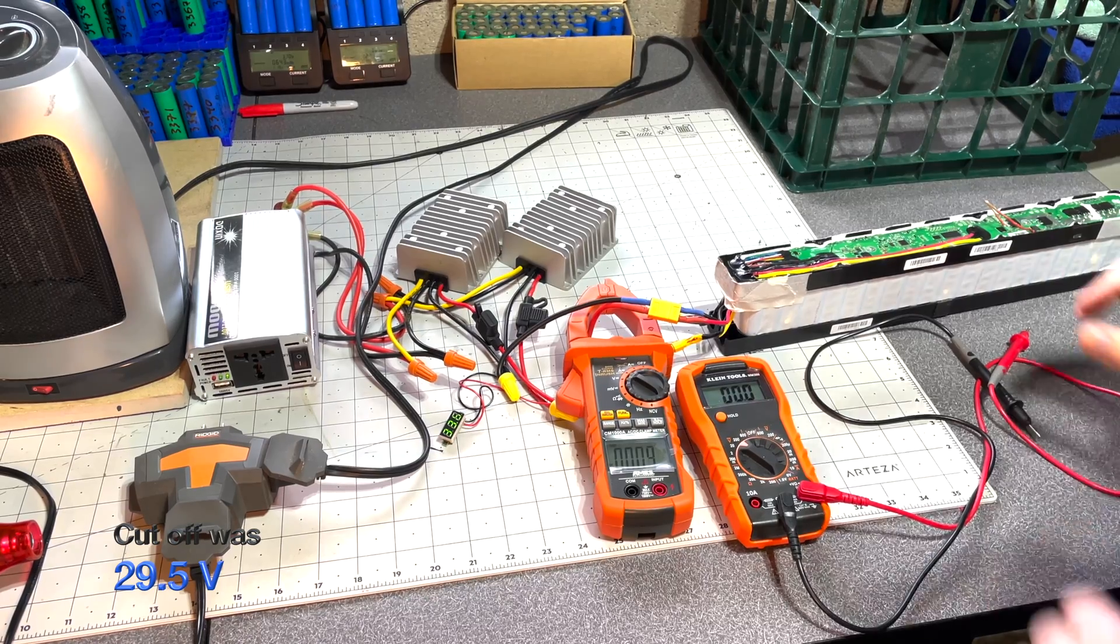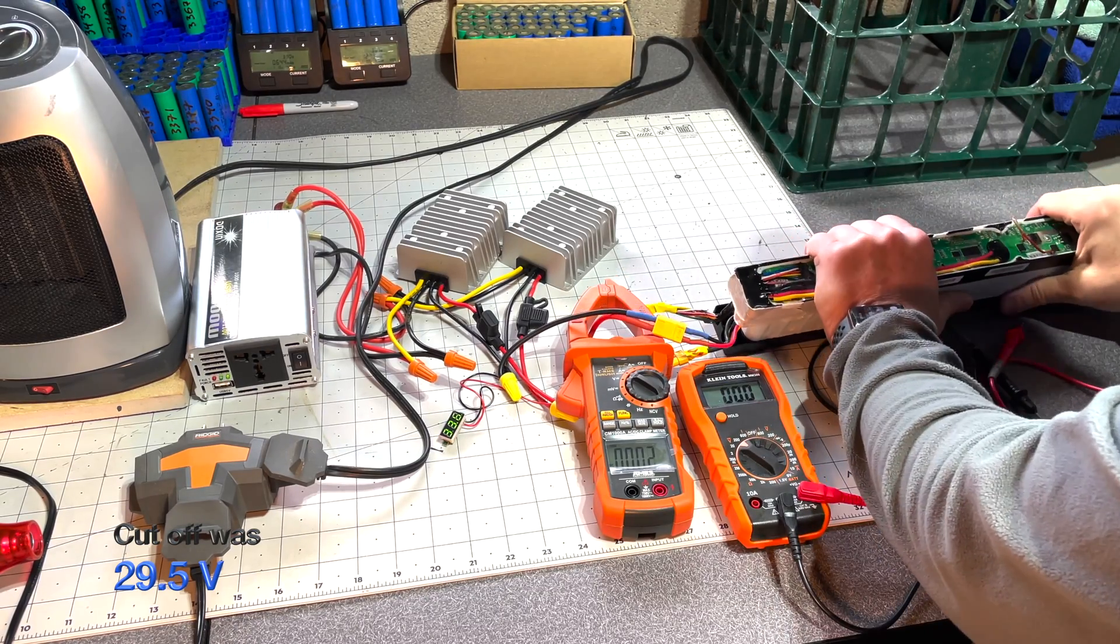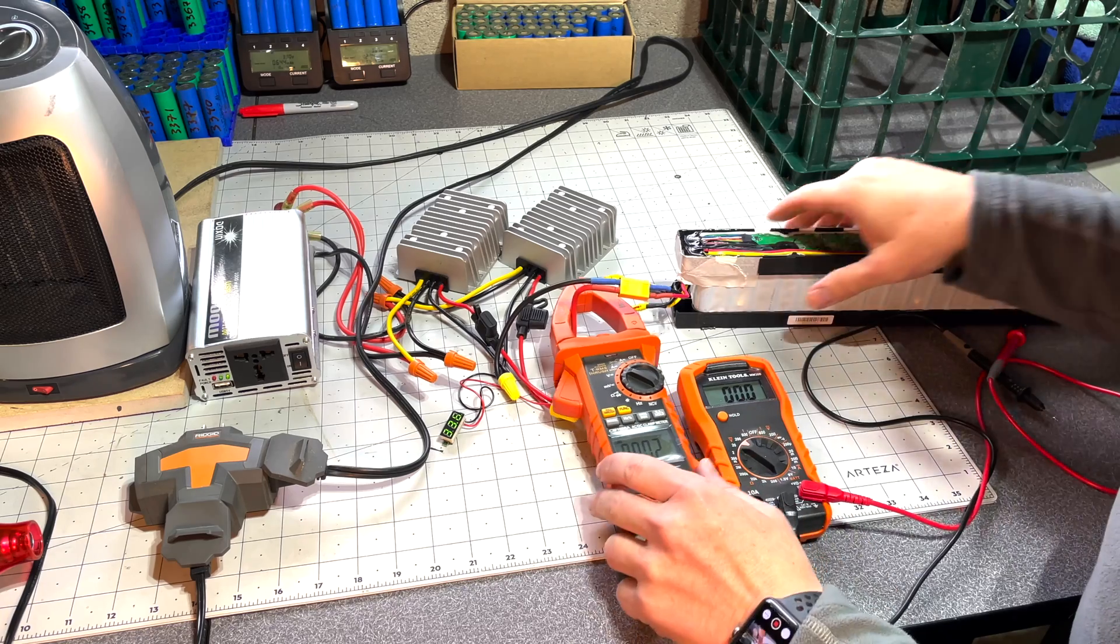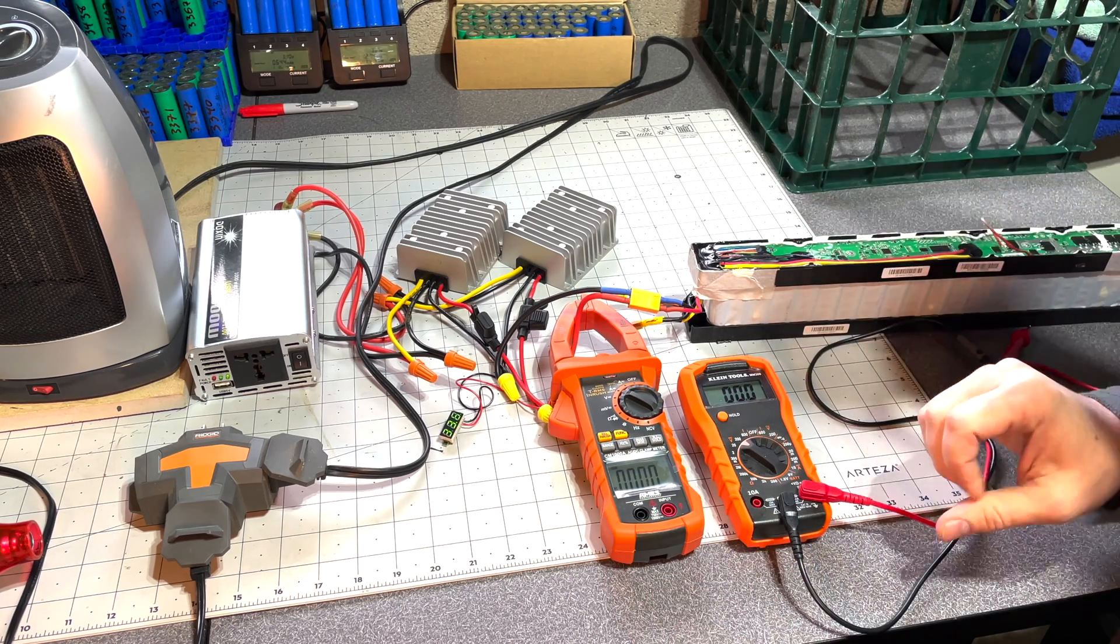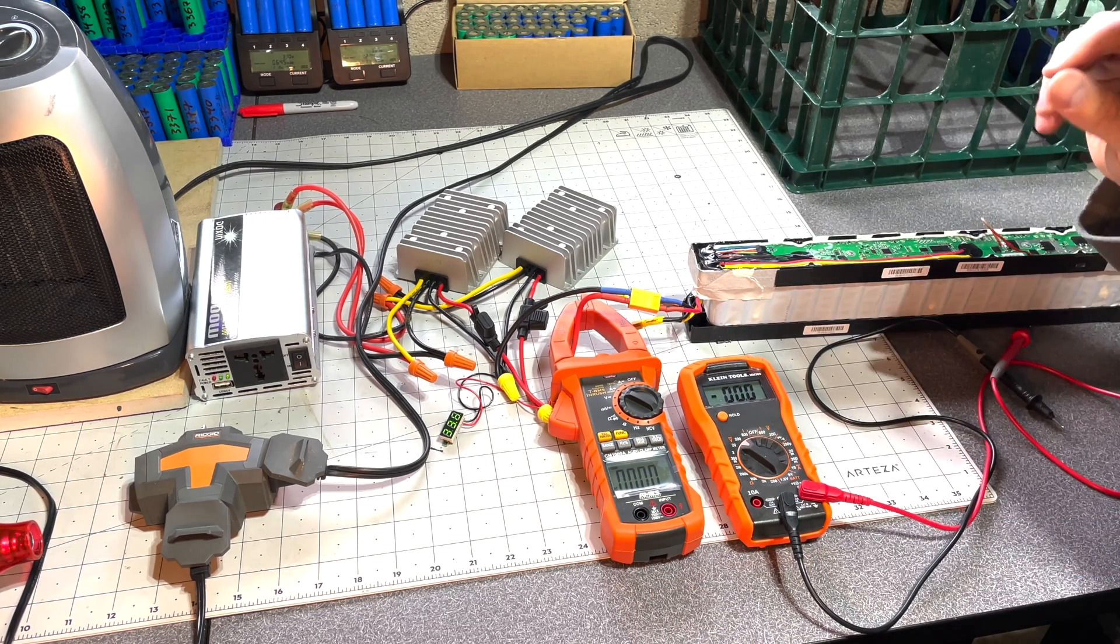There we go. Alright guys, so we know that the low voltage is working with this hack. When it went below 29.6 I think, it shut off the power.